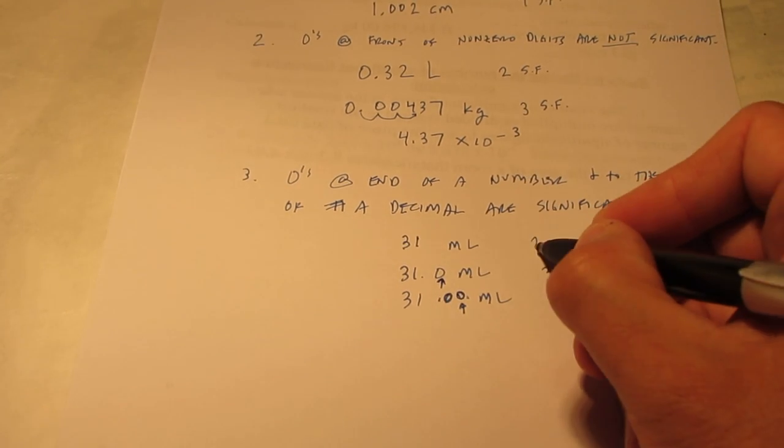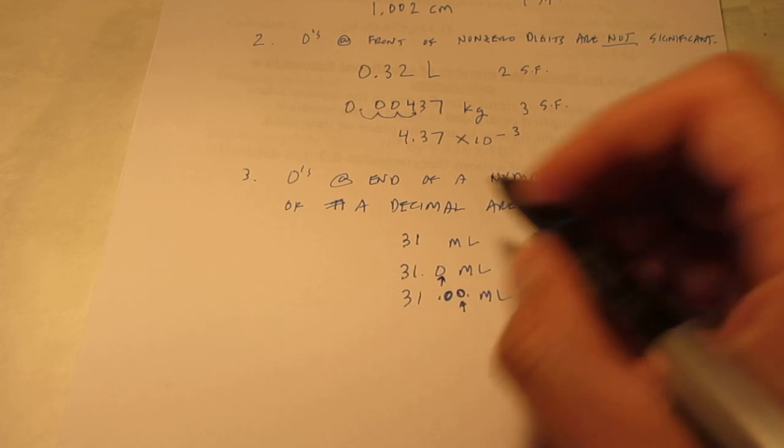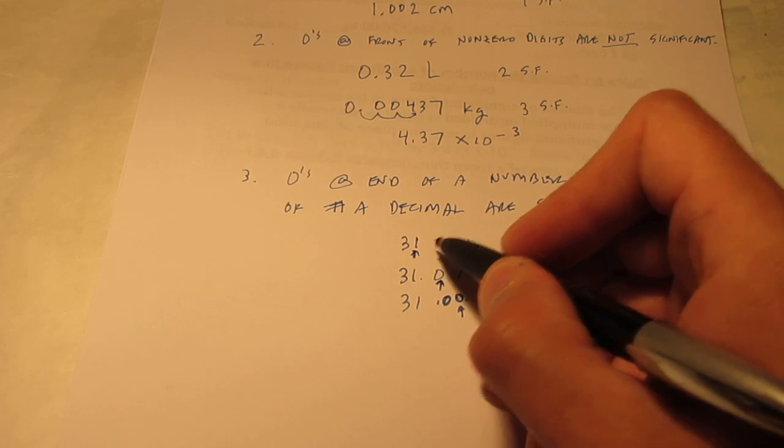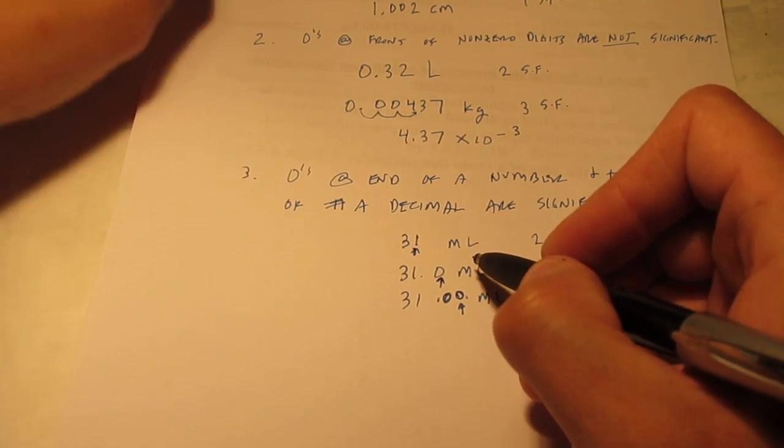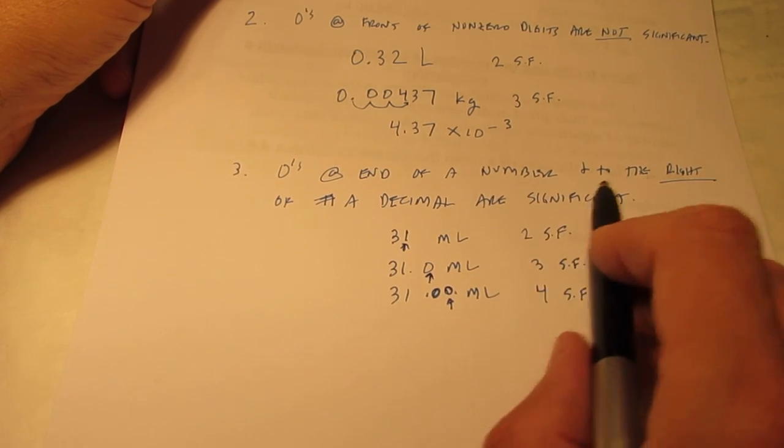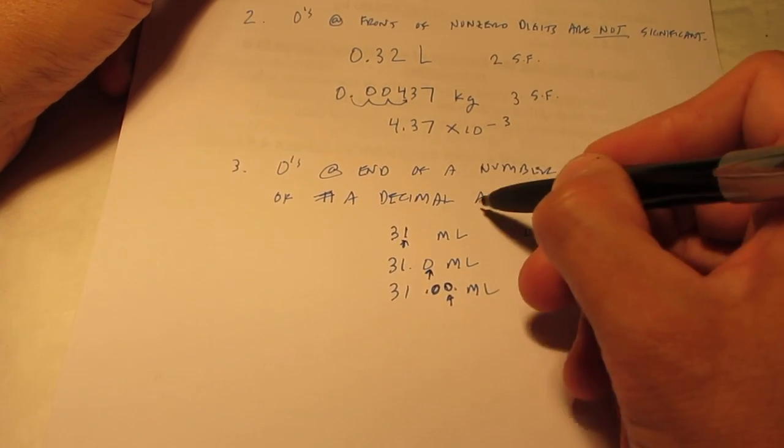Here, I only have two significant figures. That one is my estimated value. I have no idea what comes after it using this measuring device. So, once again, zeros at the end of a number and to the right of a decimal are significant.